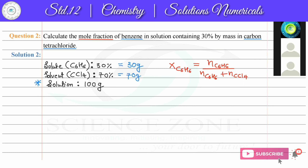We calculate moles using: weight divided by molar weight. The molar mass of benzene (C6H6) is 78 grams per mole (6×12 for carbon + 6×1 for hydrogen). So moles of benzene = 30 divided by 78 = 0.384 moles.